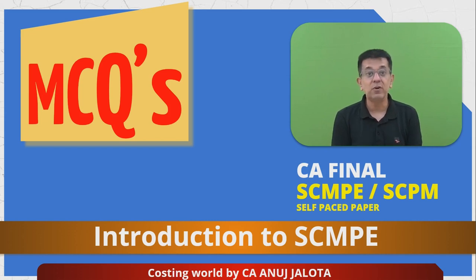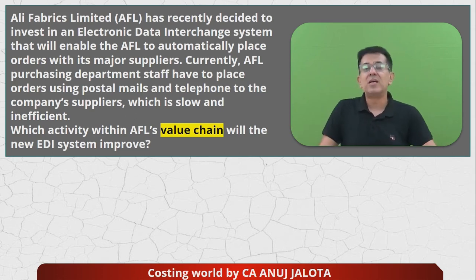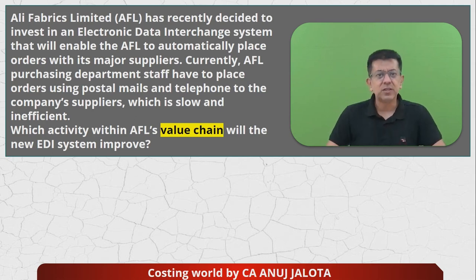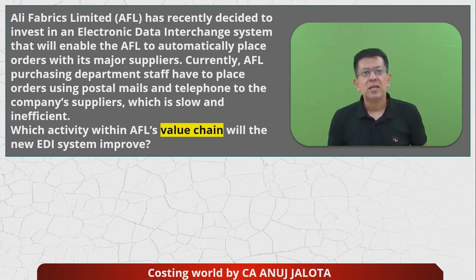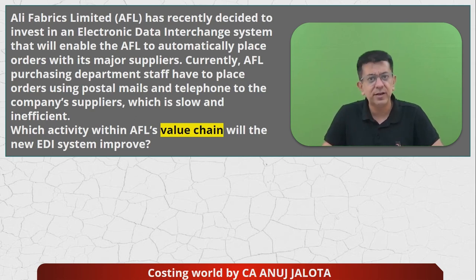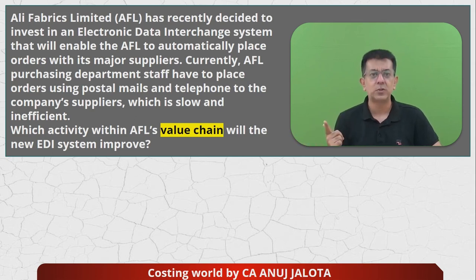This is from Chapter 1 — introduction to SCMP, basics of how business works. The question for today: AFL has recently decided to invest in Electronic Data Interchange, popularly called EDI. These are softwares that help you exchange information very fast with your key partners — suppliers, distributors, etc. — enabling AFL to automatically place orders with major suppliers. For example, whenever stock touches the reorder level, a mail automatically goes to the supplier placing the order, and the supplier automatically sends back dispatch and tracking details.